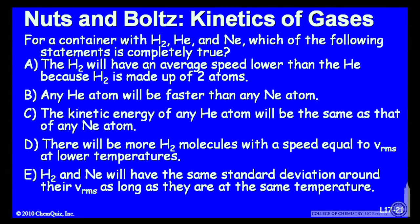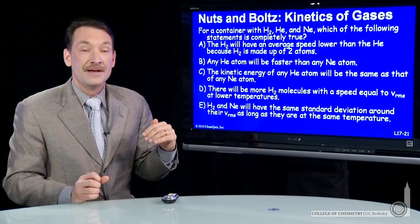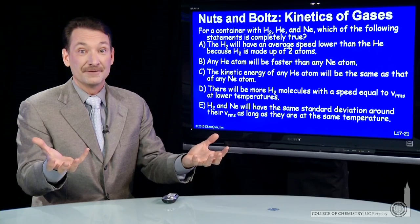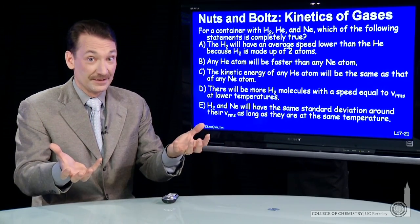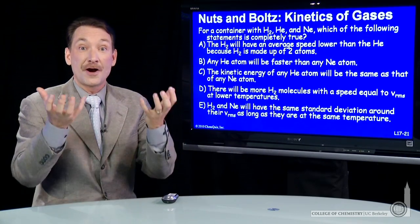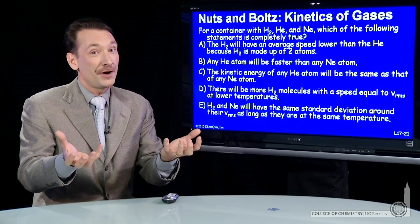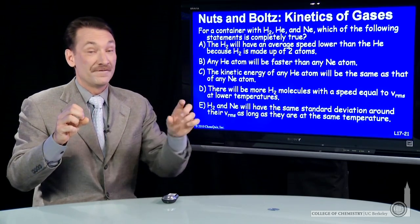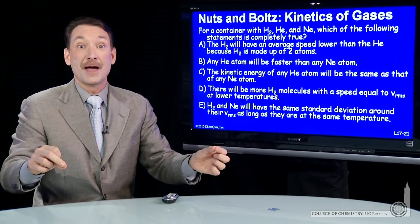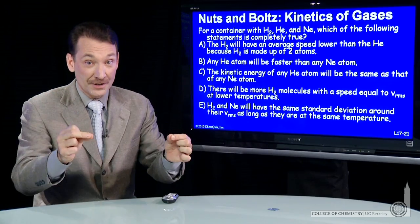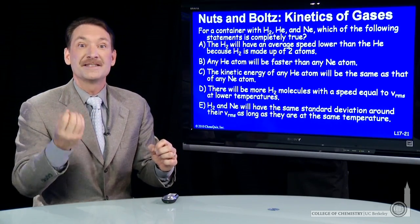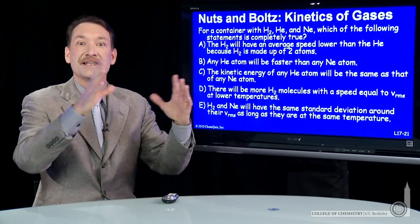Statement B: any helium atom will be faster than any neon atom. Now helium is the lighter atom and neon is more massive, so the root mean squared speeds of helium and neon will be different. But the root mean squared is a mean speed. If you pick out any two individual particles, you can find very rapidly moving heliums and very slow moving neons, or vice versa. So you can't apply the RMS speed to individual particles — the RMS is a mean speed and it applies to the entire sample.